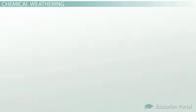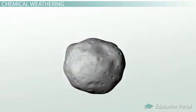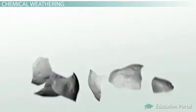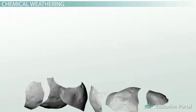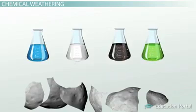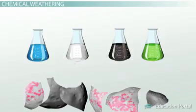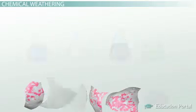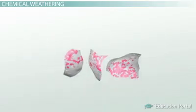Now we mentioned that chemical weathering is a way in which rocks get broken down. But it is important to emphasize that because there is an actual chemical change taking place, rocks are not just crumbled into smaller rocks. They are actually being chemically altered. In other words, after chemical weathering, we end up with a different substance than the one we started with.